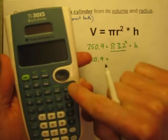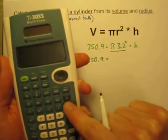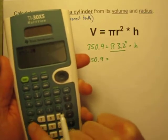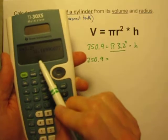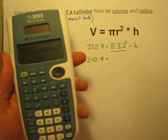So I'll just get my calculator out. I'm going to use the pi key. Pi times 3.2 to the second power equals 32.1699.